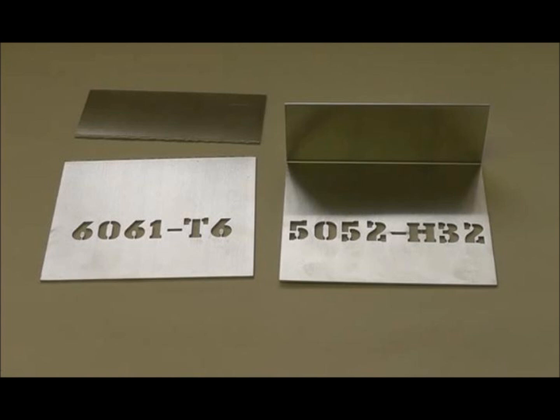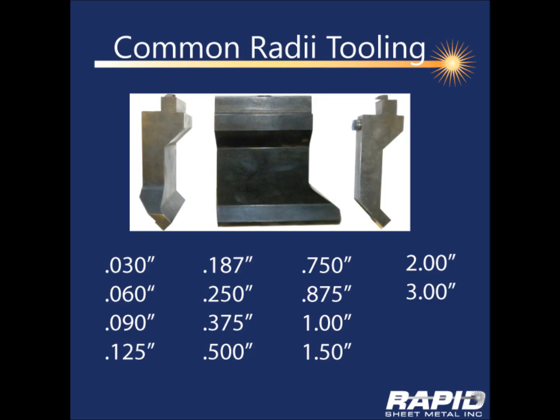For instance, when corners are welded. For your reference, common radii tooling is listed. As an example, if 6061T6 was the desired material for a 90 thousandths thick part, the appropriate forming tool would be one with a .187 inch radius or larger.